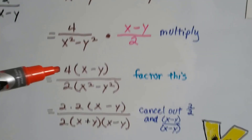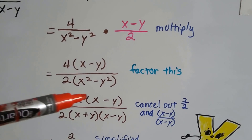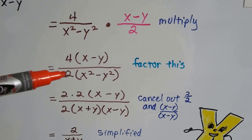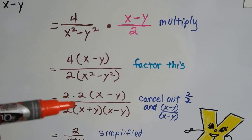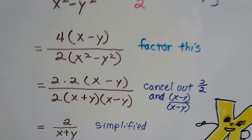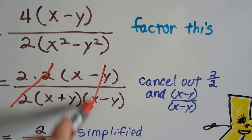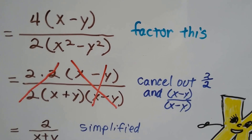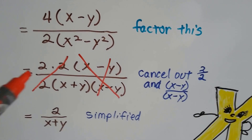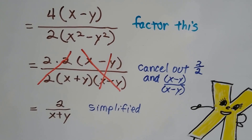Now, when we factor this, the numerator becomes 2 times 2 times x minus y. And the denominator becomes 2 times x plus y times x minus y. Now, we can cancel out these 2s, and we can cancel out the x minus y over x minus y because they make a 1. And all we're left with is 2 over x plus y. And it's simplified.